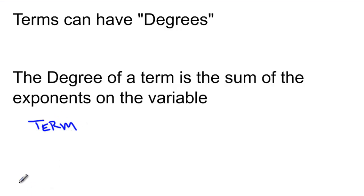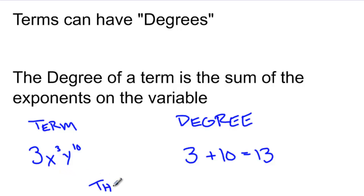If my term is 3x³y¹⁰, and I want to find the degree of this term, I would look at the variables, x and y. I would look at the degrees on each variable, 3 and 10, and I would add those degrees together. So the degree of 3x³y¹⁰ is 13.